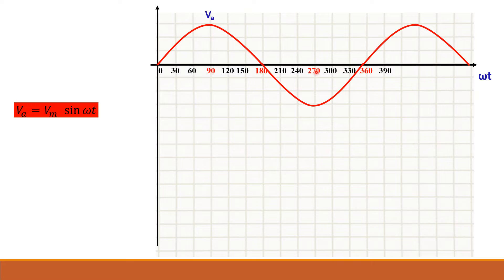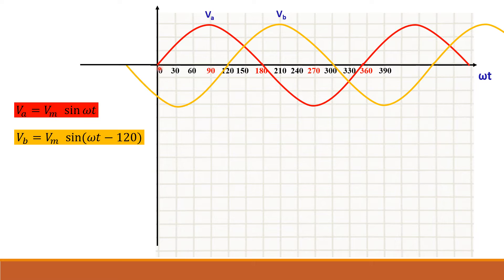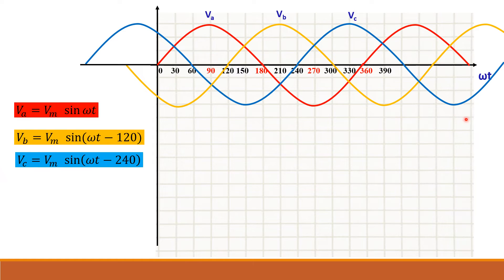Now let us draw VB. VB is lagging by 120°, so take 120° as the reference and simply shift the waveform. Your waveform should start at 120°, giving you the VB waveform. Complete the sequence and draw the remaining part. Now let us draw VC — VC is lagging by 240°, so locate 240° and draw the VC waveform. We have now drawn all three phase voltages.